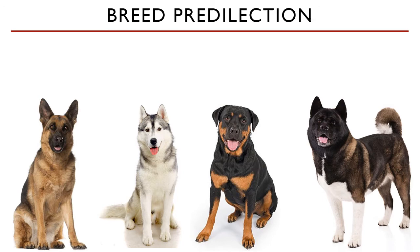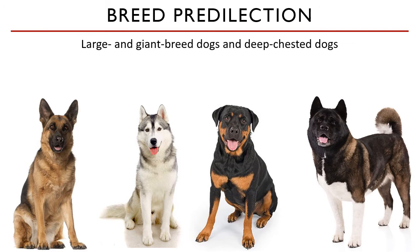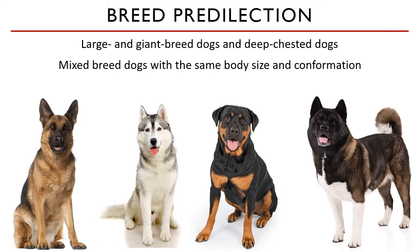Looking at the statistics for GDV incidence, large and giant breed dogs are found to be predisposed to this syndrome. Dogs which are deep-chested are also found to suffer from GDV more so than narrow-chested dogs. Examples are German Shepherds, Siberian Huskies, Alaskan Malamutes, Rottweilers, and Akitas. Other breeds predisposed include Great Danes, St. Bernards, and Bloodhounds, which are also at high risk of developing GDV.